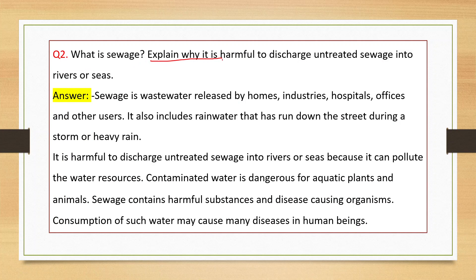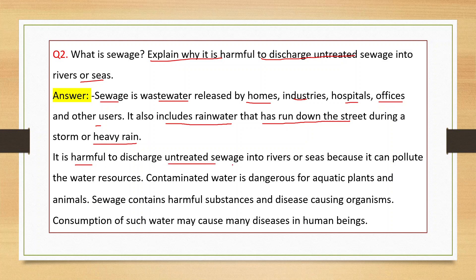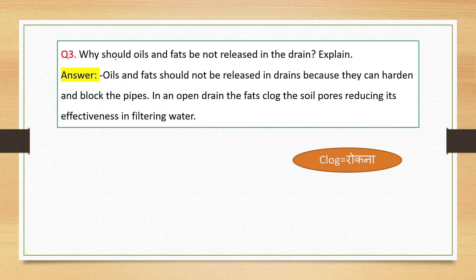Question number two: What is sewage? Explain why it is harmful to discharge untreated sewage into rivers or seas. Sewage is wastewater released by homes, industries, hospitals, offices and other users. It also includes rainwater that has run down the street during a storm or heavy rain. It is harmful because it can pollute water resources. Contaminated water is dangerous for aquatic plants and animals, and sewage contains harmful substances and disease-causing organisms.